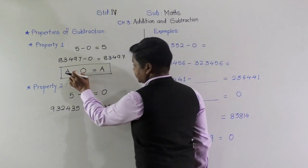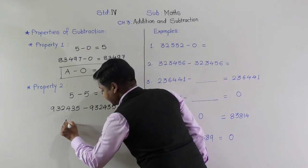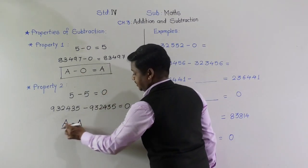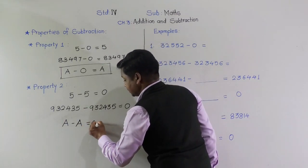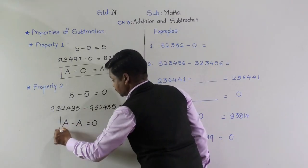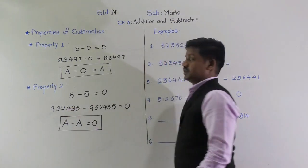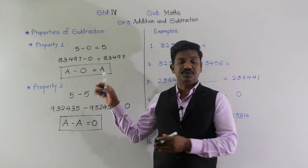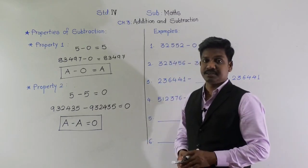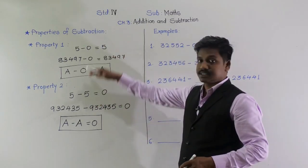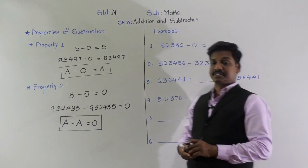If you want to generalize: a minus a, where same number is subtracted, a minus a equals 0. So these are the two properties we observe during subtraction — just keep them in mind. Based on these two properties, we are going to solve some examples.